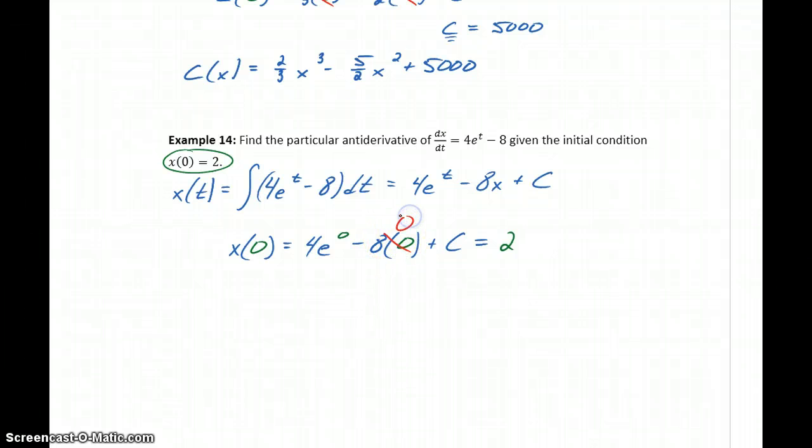So 8 times 0 becomes 0. 4 times e^0, anything to the 0 power becomes 1. So we get 4 + c = 2, or subtracting the 4 over, we get c = -2.